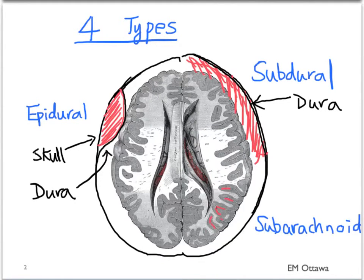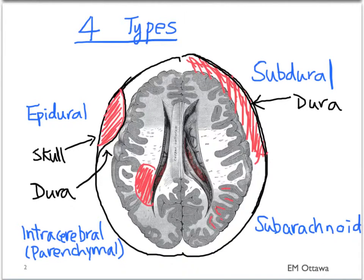The third kind is subarachnoid hemorrhage, where the blood is underneath the subarachnoid membrane of the brain. The last type is intracerebral, also known as parenchymal hemorrhage, where the blood is in the parenchyma of the brain. We will first discuss the common presentations of the bleeds and divide it up into two separate videos for the specific presentations.